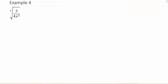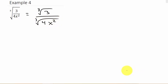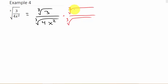Alright, here we have another cube root. Let's split the radical up: cube root of 3 over the cube root of 4x squared. I can't simplify the radicals because 3 is not a perfect cube and doesn't have a factor that's a perfect cube; 4 is not a perfect cube; and x squared is not a perfect cube. So now we're ready to rationalize the denominator. I need to multiply numerator and denominator by the cube root of something so that I end up with a perfect cube root.